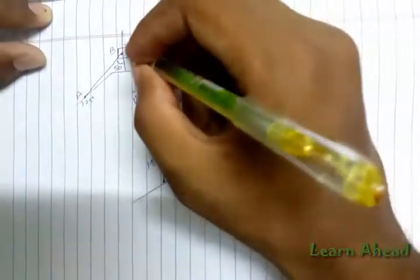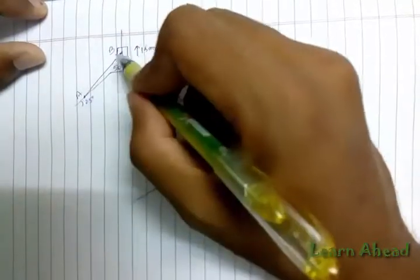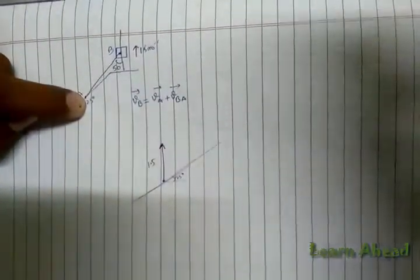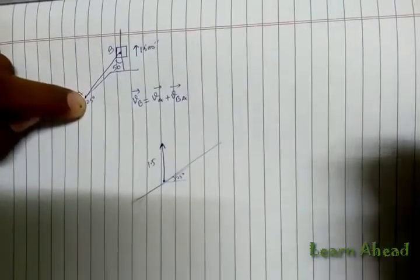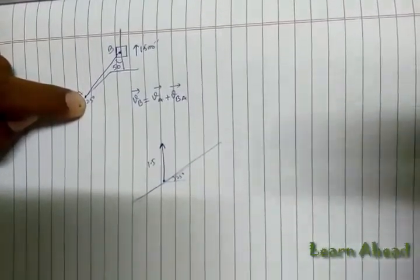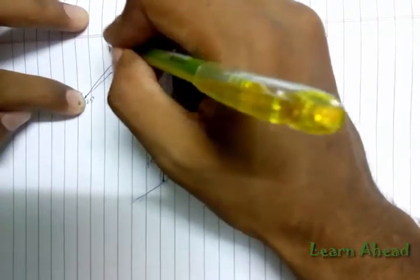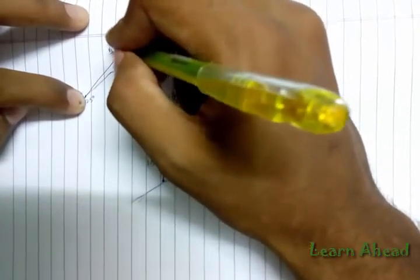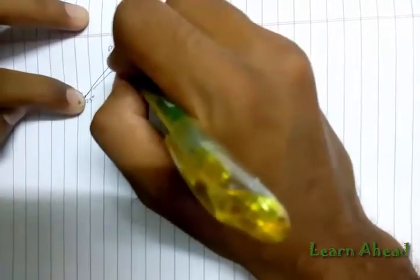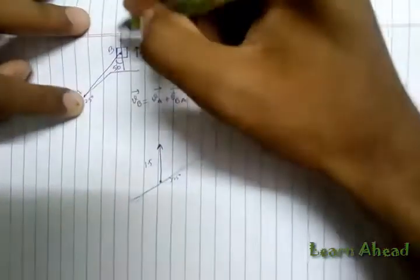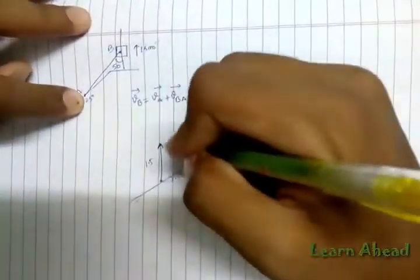And again, VBA. Now you know that AB is a rigid link. So if A is fixed, VBA means the velocity of B with respect to A. If A is not moving, then the velocity of B can only be along the perpendicular direction, because if any component of B were in this direction, it would mean the rod is extending, which is not possible because it's a rigid link. So I draw a line perpendicular to this, passing through this step.